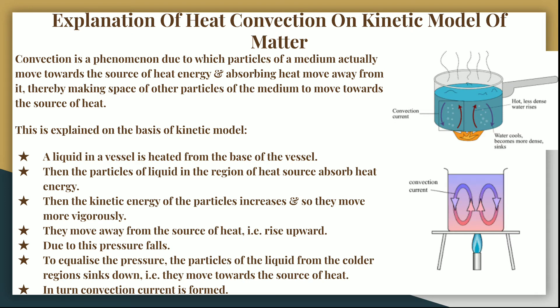Next we come to the explanation of heat convection on the kinetic model of matter. Convection is a phenomenon due to which the particles of a medium actually move towards the source of heat energy, absorb the heat energy, move away from it, thereby making space for other cool particles to move towards the source of heat. It moves like a circle, and you can see from the second picture that a convection current is formed.